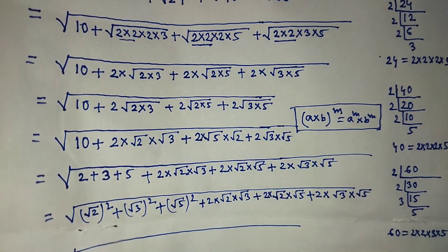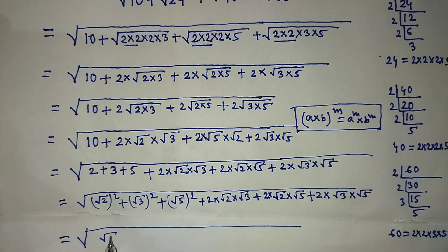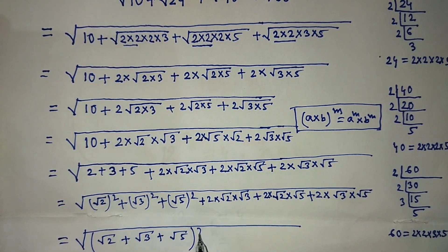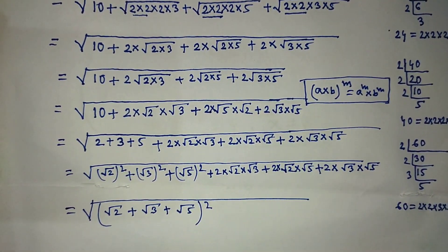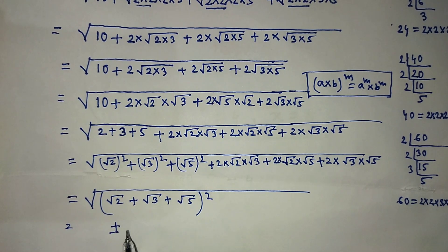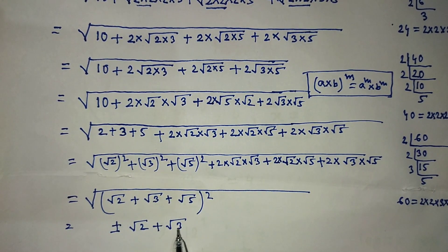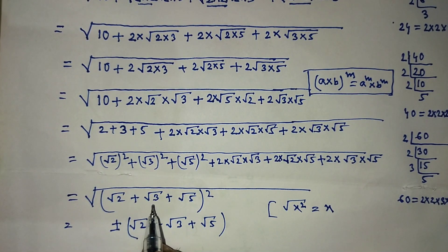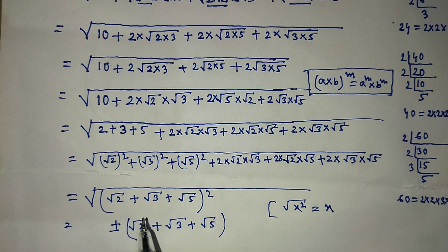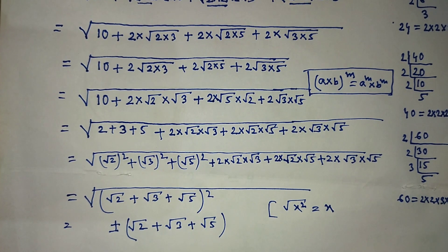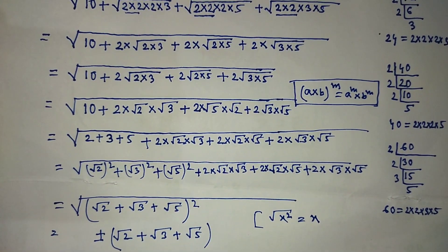If we apply this formula, A is √2, B is √3, and C is √5, so the expression equals (√2 + √3 + √5)². Therefore, the square root of the whole expression is ±(√2 + √3 + √5). Using the rule √(x²) = x, our final answer is √2 + √3 + √5. If you like this video and this trick, please support me and subscribe to my channel. Thank you, bye bye.